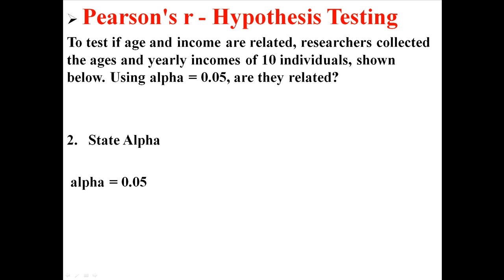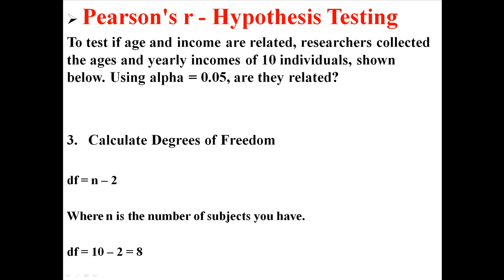Our alpha is going to be 0.05, like usual. And our degrees of freedom, we're going to calculate degrees of freedom using n minus 2, where n is the number of subjects we have. So we have 10 individuals minus 2, this analysis is going to have 8 degrees of freedom.